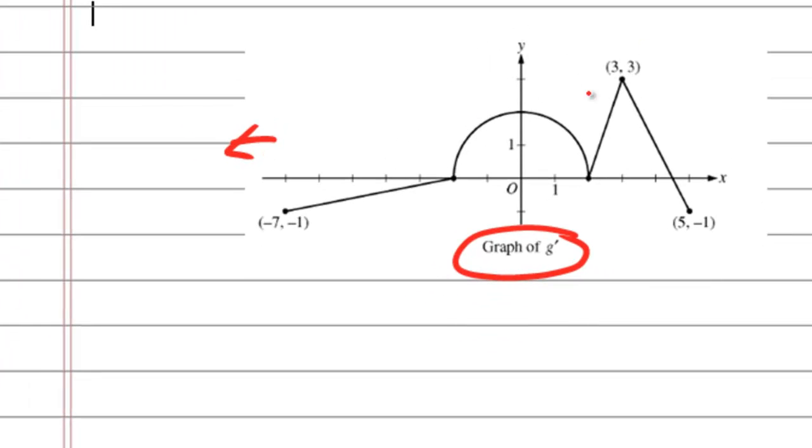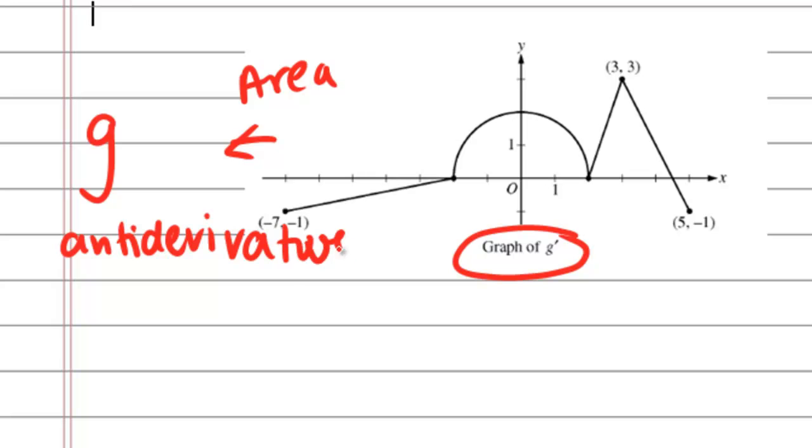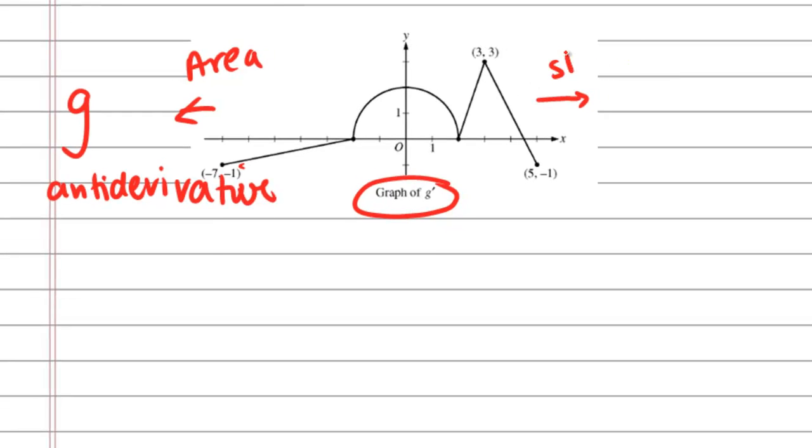The function that we're given here is g prime. So if we calculate the area under that graph, that will lead us to a change in height of the g function, which is the antiderivative. If we go the other direction and look at the slopes of this particular graph, then that will give us the values of the heights of g double prime, which is g's second derivative.